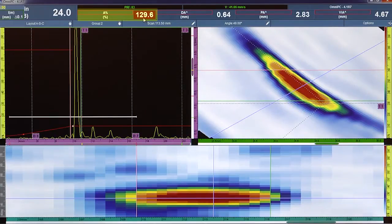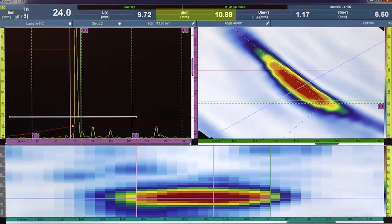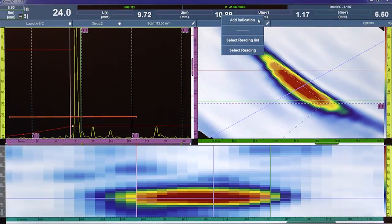129.6% amplitude at a depth of just below the surface. The UT axis is 2.8 mm from the face of the wedge, 4.67 mm relative to the weld centerline on the positive side. On the UT axis, 9.72 mm to 10.89 for an overall through-wall dimension or height of 1.17 mm, and a flaw length of 6.50 mm. The flaw is added to the indication table.